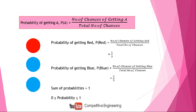So probability can be zero, and on the other side it can be a maximum of one. Zero probability means there is no chance of getting that outcome. On the other hand, if probability is one, it means we are one hundred percent sure we will get that outcome. For example, if there is only one ball and it is red, P(red) = 1/1 = 1. So normally the probability value varies between zero and one, including both.